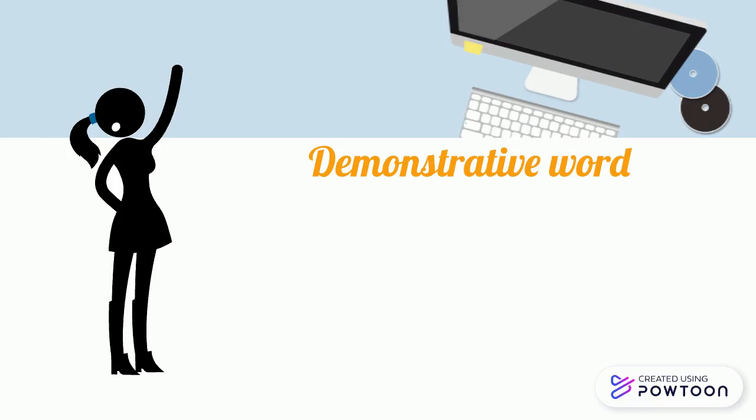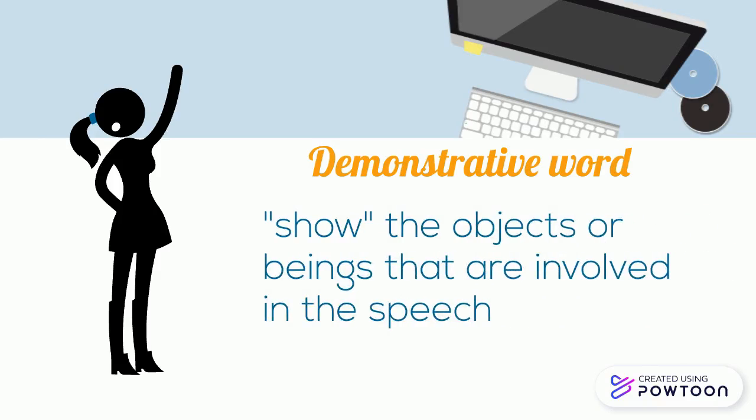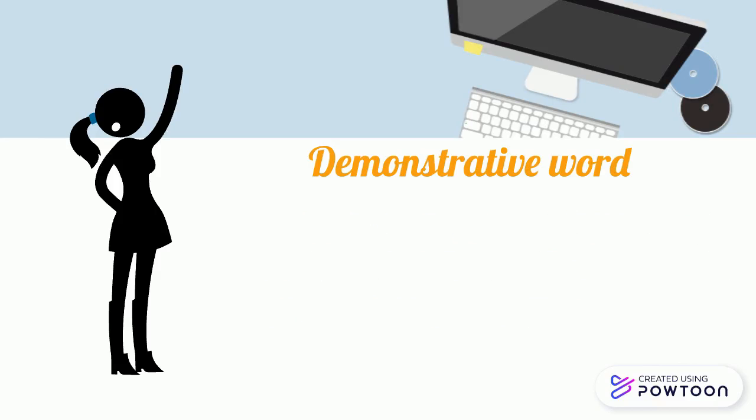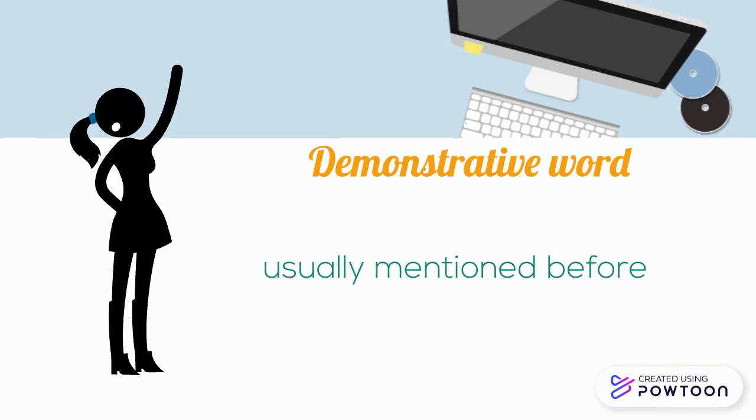A demonstrative word — adjective or pronoun — is used to show metaphorically the objects or beings that are involved in the speech. Usually, these objects or beings have been mentioned before, for instance with a definite article.